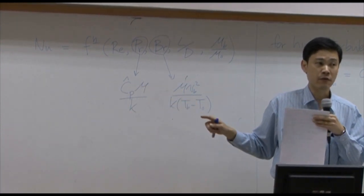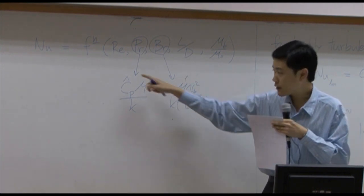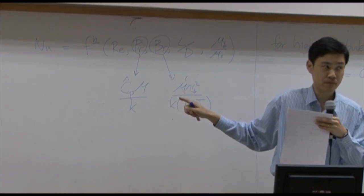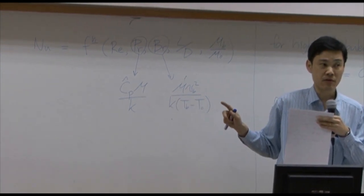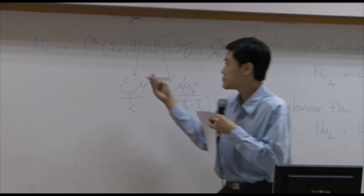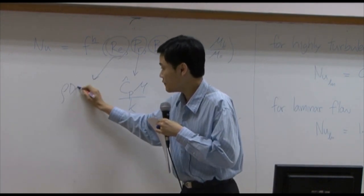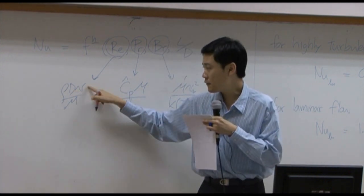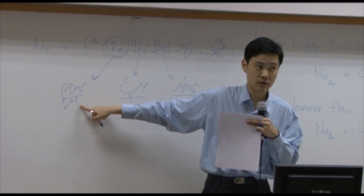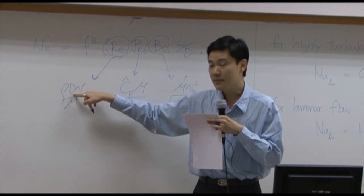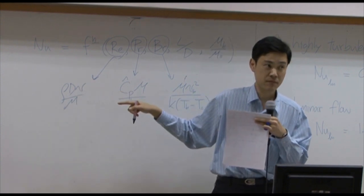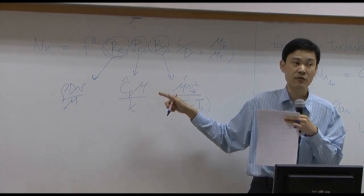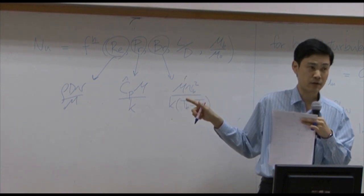All of them are function of fluid. None of these three variables is a function of system, unlike in Reynolds number. Reynolds number is rho d v over mu. Three of them - rho, v, mu - are function of fluid, but diameter here is a function of the system. So Prandtl number is a little bit different because it's characteristic properties of the fluid.